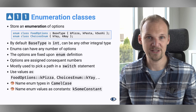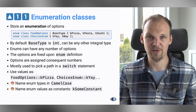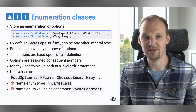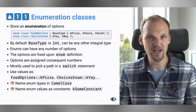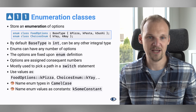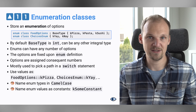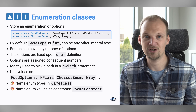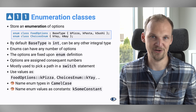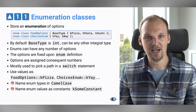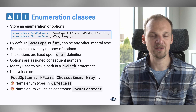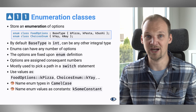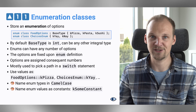For example, here we have the food options, and they are pizza, pasta, and sushi. And we can have the choices enum, which is just yay or nay. We usually name them just like we name constants, because they are unchangeable and constant.